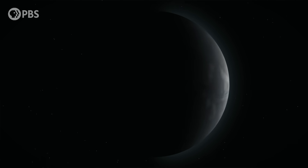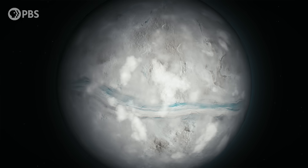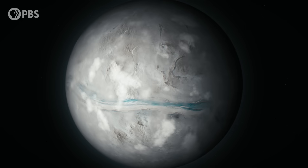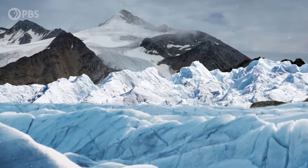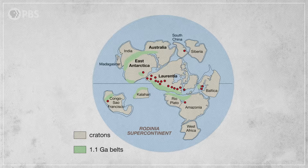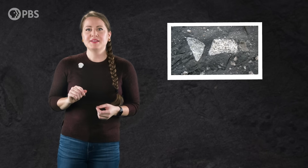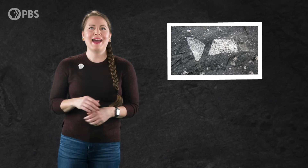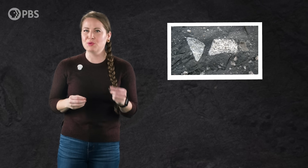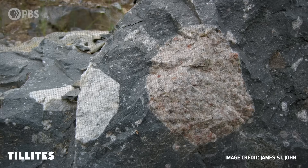Rodinia started breaking apart around 750 million years ago, well before the Cambrian started. And its breakup might have been linked to something else that happened late in the Proterozoic. Since the 1930s, scientists have been finding evidence that glaciers were common at the equator late in the Proterozoic. Places like Western North America and Southern Australia were tropical or subtropical back in those days. If you look at deposits from the late Proterozoic, you'll find a haphazard mixture of sand, mud, gravels, and boulders — deposits called tillites, which are the material left behind by glaciers.